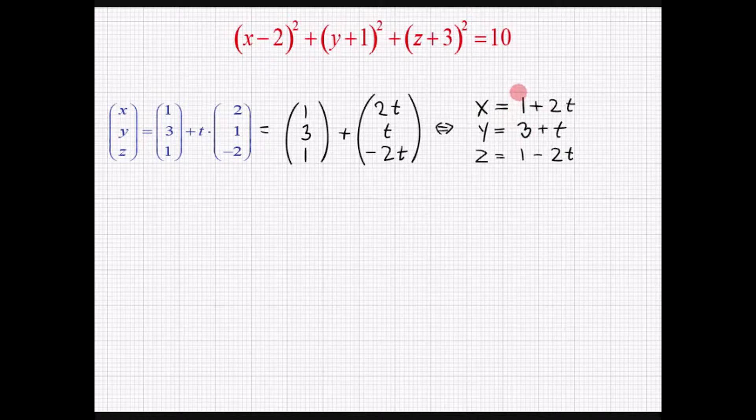Og nu kan vi altså indsætte 1 plus 2 gange t ind på x'es plads her. Herefter kan vi indsætte 3 plus t ind på y'es plads. Og vi kan indsætte 1 minus 2 gange med t ind på z'es plads i ligningen. Så det starter vi med at gøre. Vi har altså nu 1 plus 2 gange t. Det er altså x. Vi trækker 2 fra og sætter det i anden.